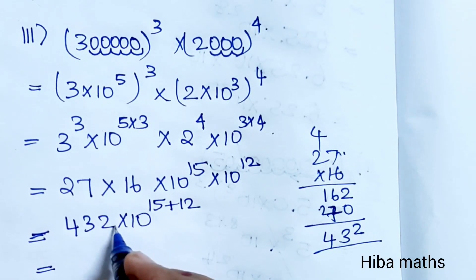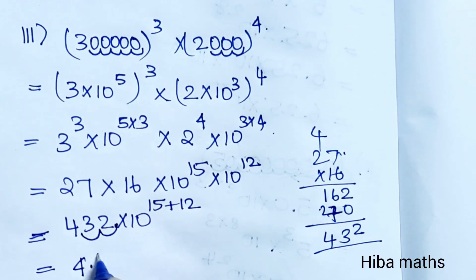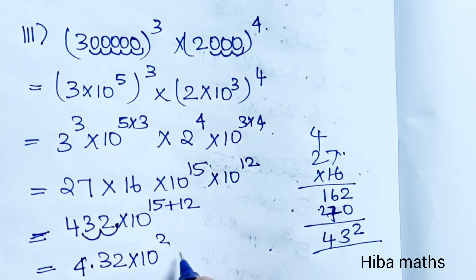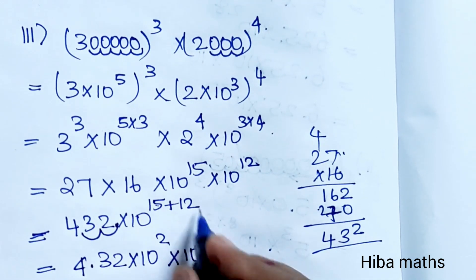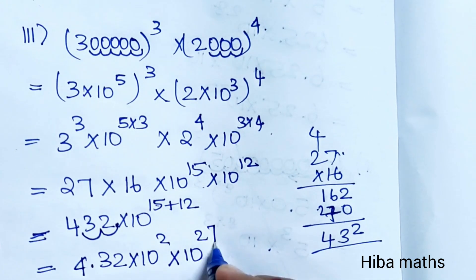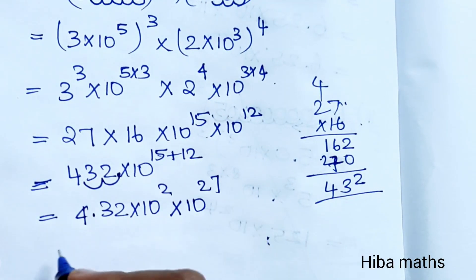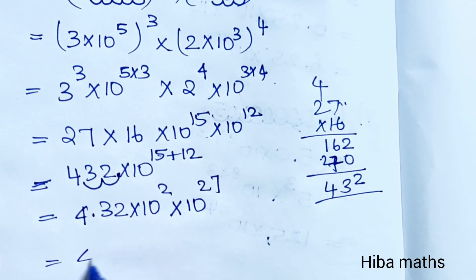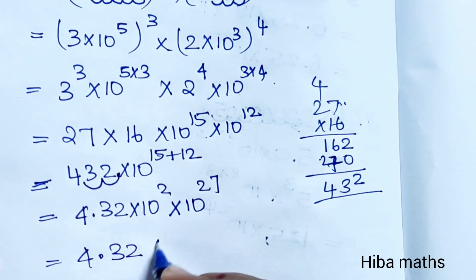The point is at 2 digits. So 432 into 10 power 2, into 10 power 27 plus 2. Answer: 4.32 into 10 power 27.